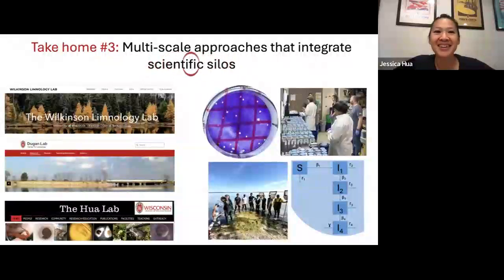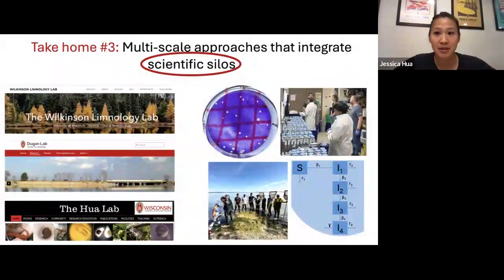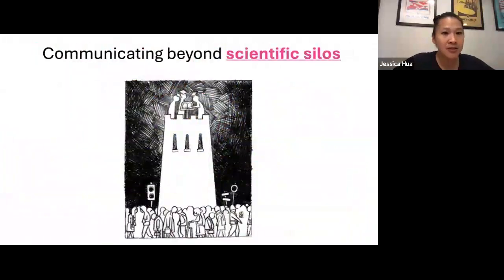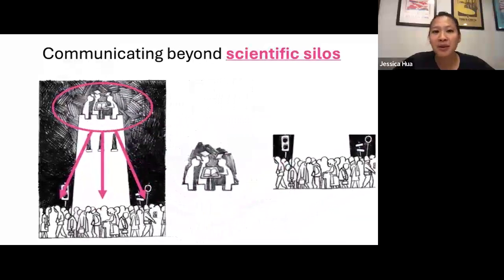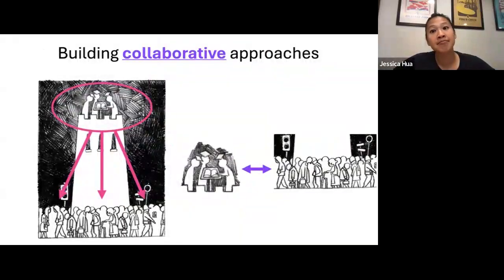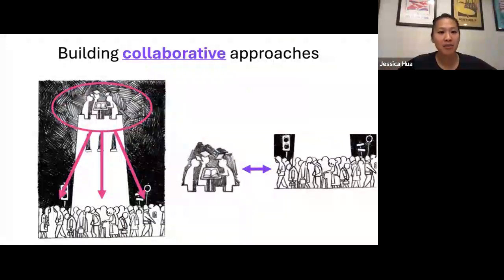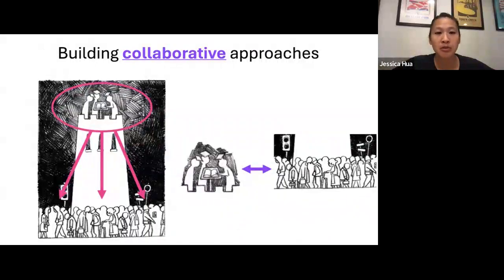Hopefully I've convinced you that by having genuine conversations across different labs with different expertise and thinking about different tools across disciplines, we might be able to address these really challenging problems moving forward. Integrating across scientific silos is really important. Part of my role and interest is also to communicate beyond scientific silos — thinking about how to move beyond the ivory tower approach. Communicating beyond scientific silos is important, and I think there's a lot of value in building collaborative approaches between scientists and community members.